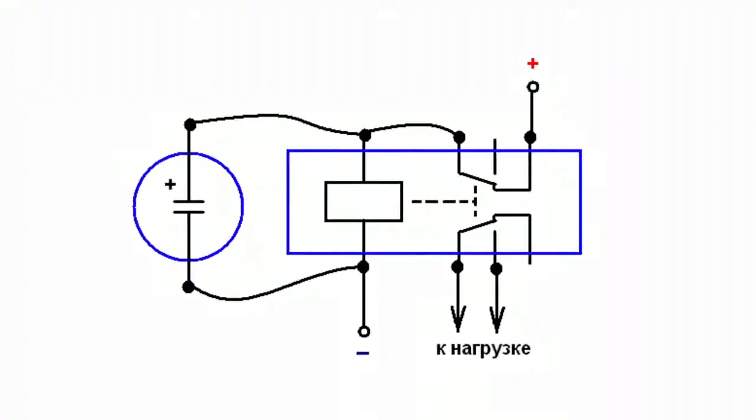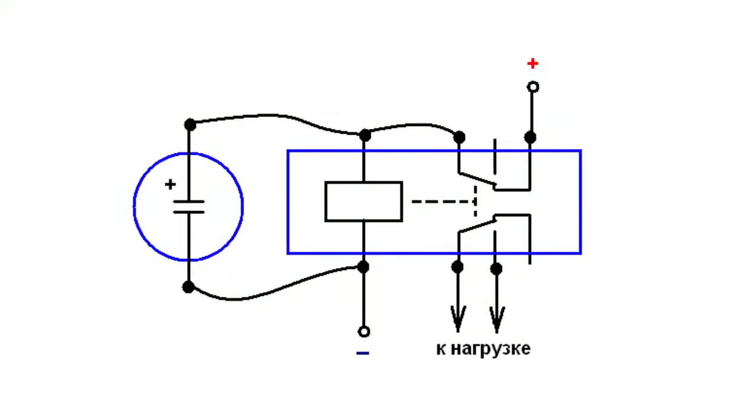Such a circuit is based on the electromagnetic relay and is often called the breaker. The circuit incorporates a relay and an electrolytic capacitor. Let's switch it on and see how it actually operates.